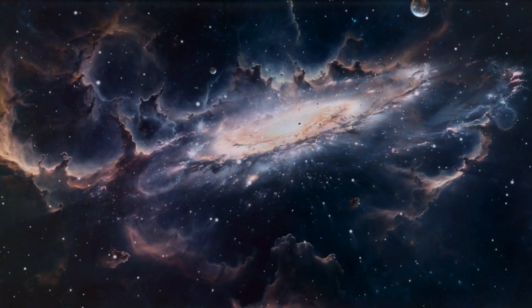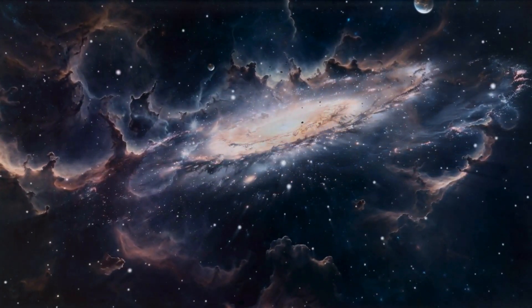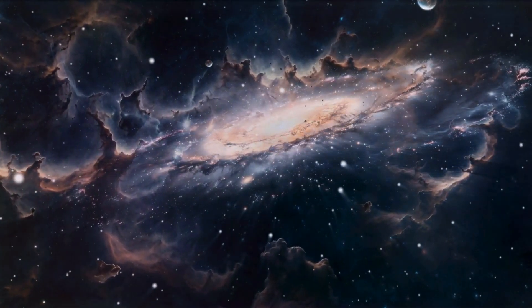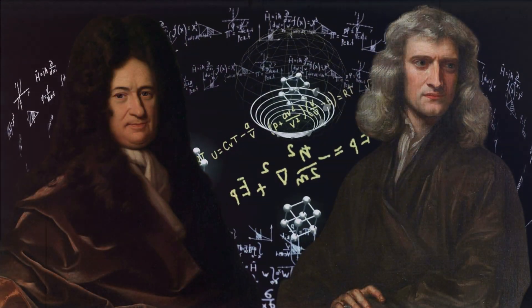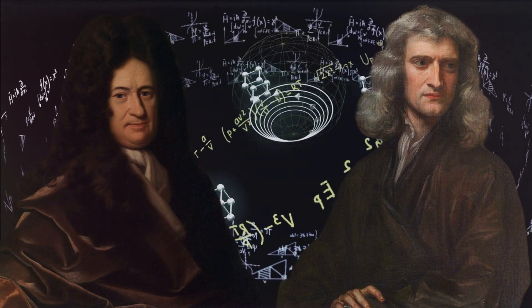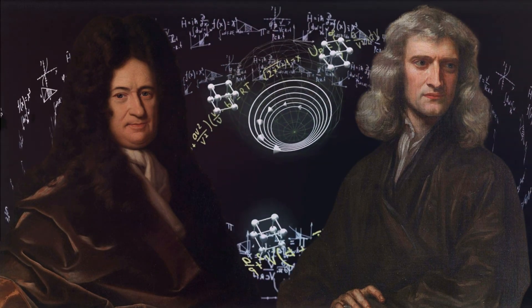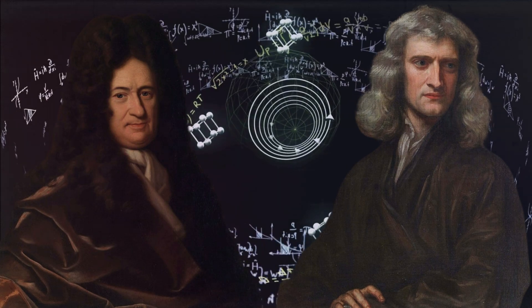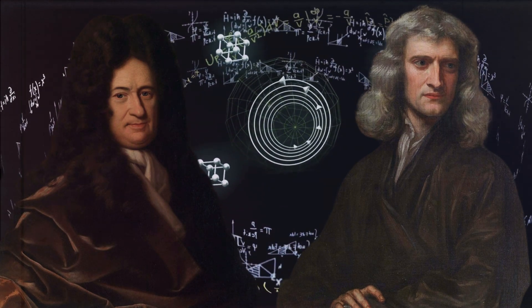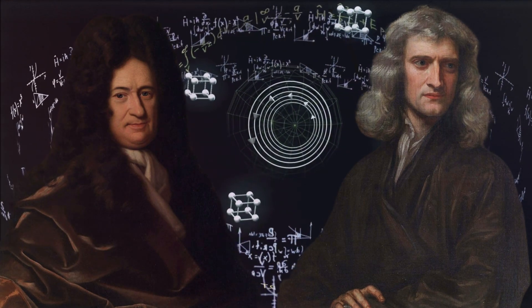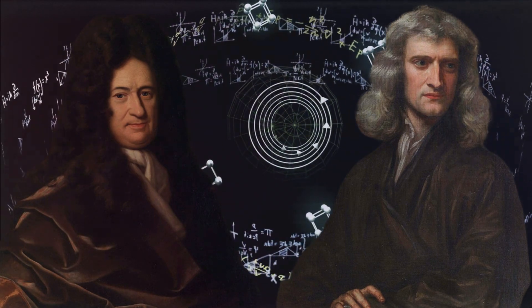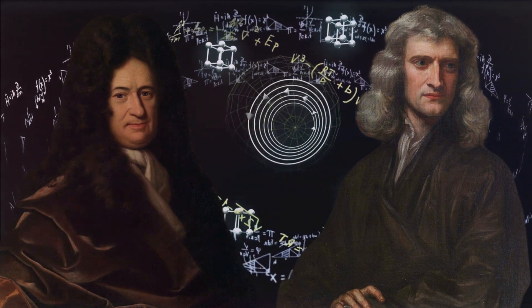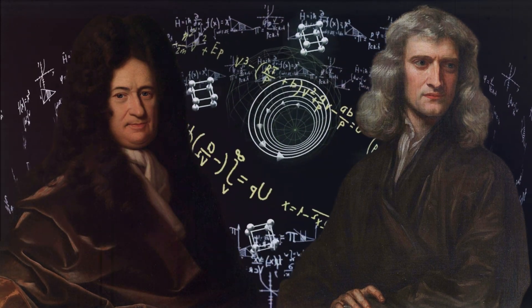Another point of contention between Leibniz and Newton was vis-viva, Leibniz's concept of living force, which anticipated modern kinetic energy. While Newtonian mechanics focused on momentum, mass times velocity, Leibniz argued that true force was mass times velocity squared, a principle that later contributed to energy conservation laws. This debate reflected their broader philosophical divide.